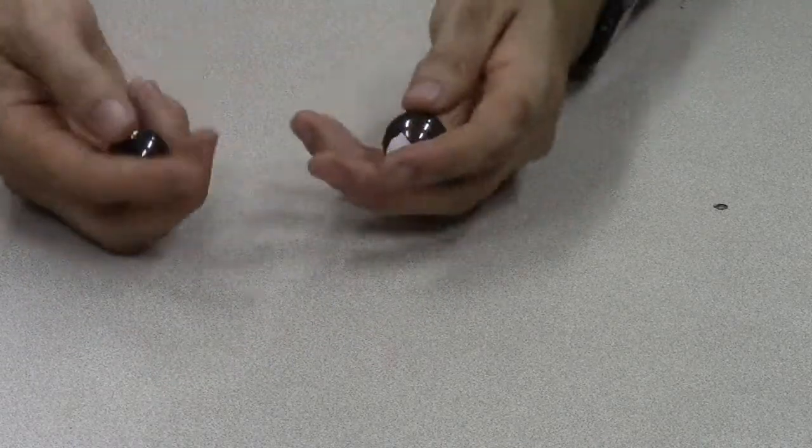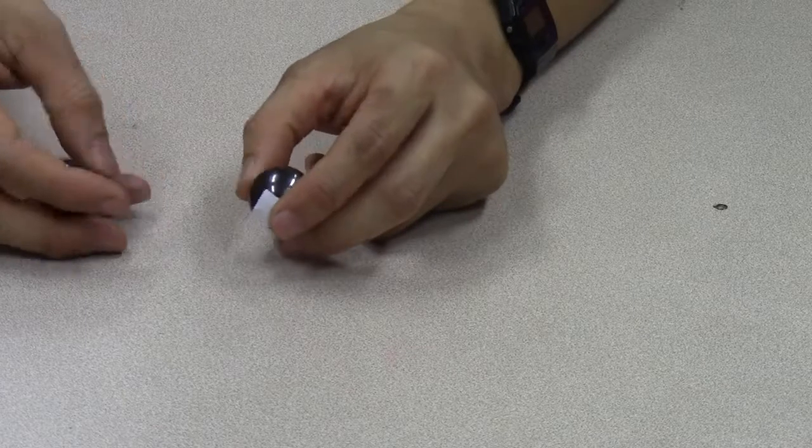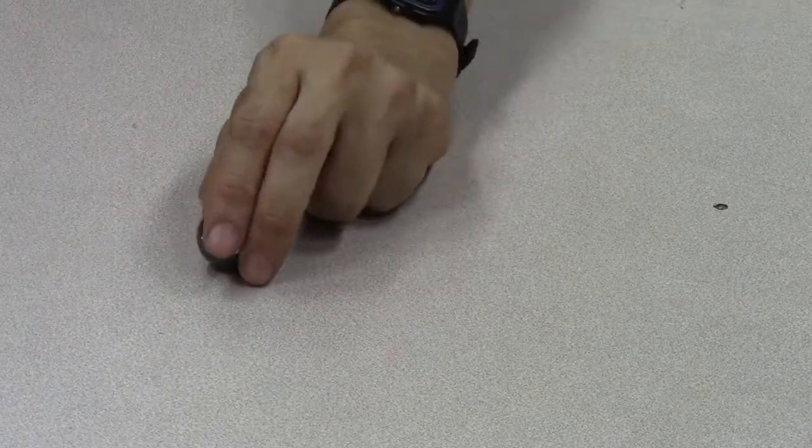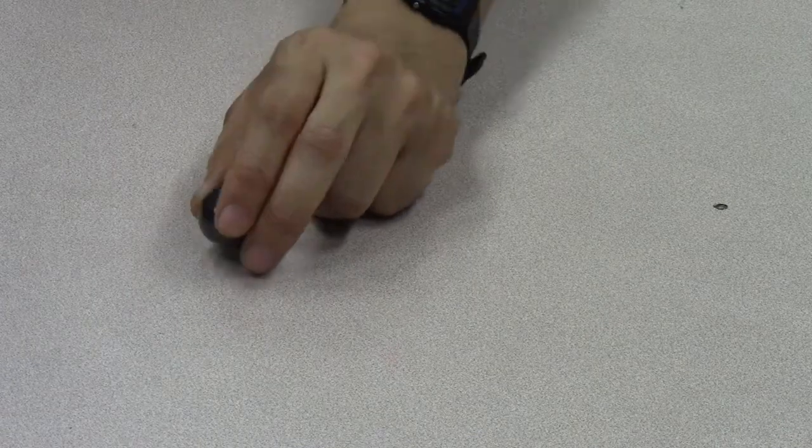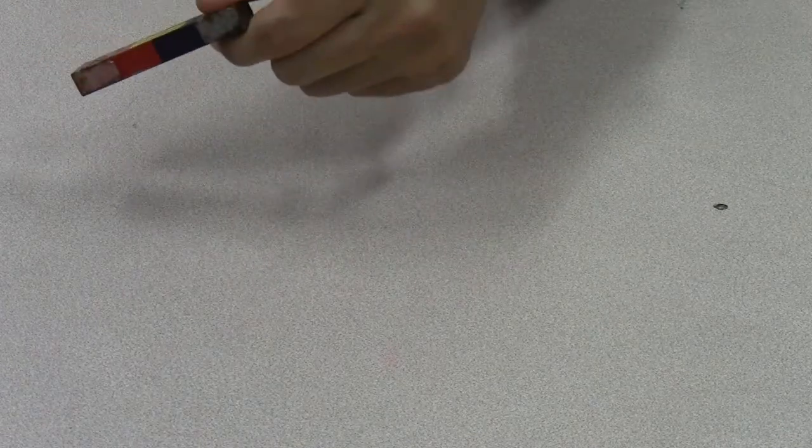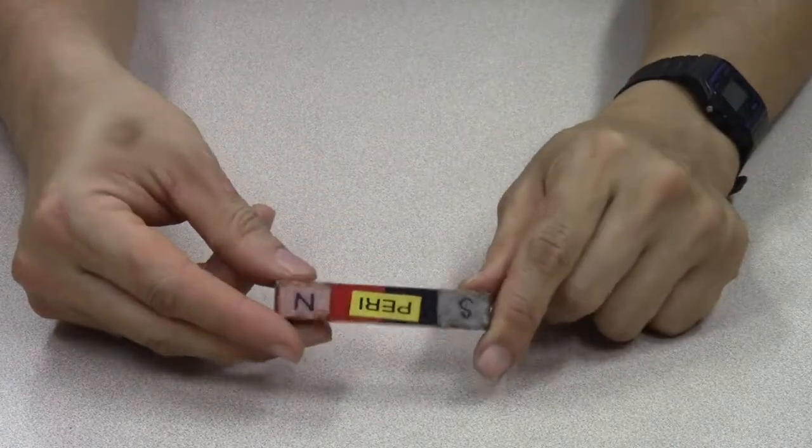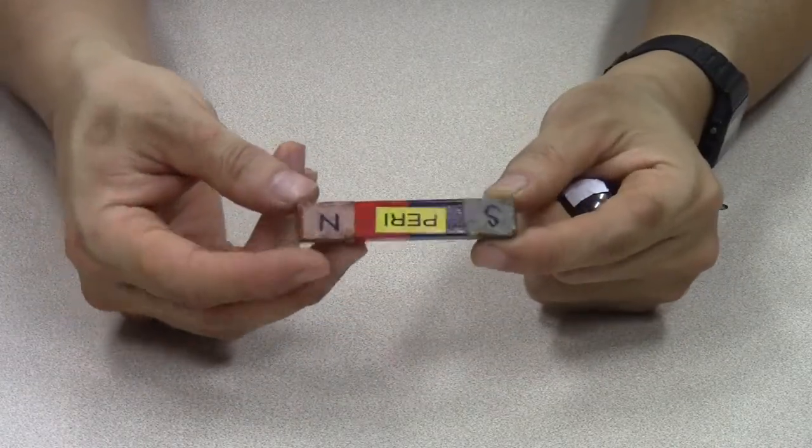But supposing you don't have a compass, how do you tell which is north and which is south? Another possibility is if you have a magnet for which you know the poles.